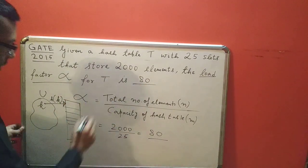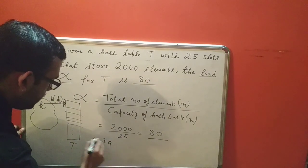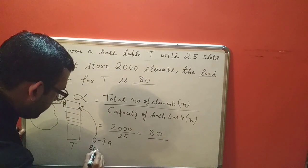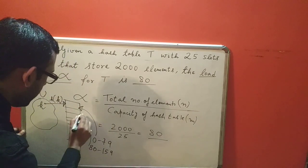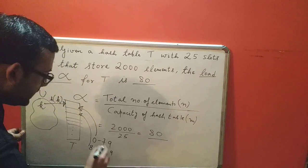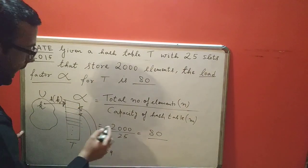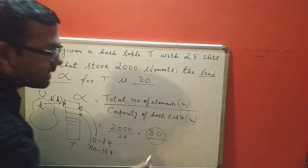That means the elements starting from 0 to 79 will get slot number 0, similarly elements from 80 to 159 will get slot number 1, and so on. This would be the case if my hash function is uniform.